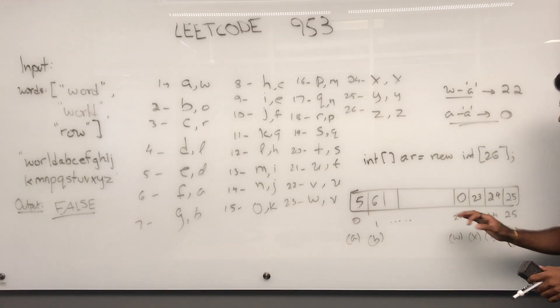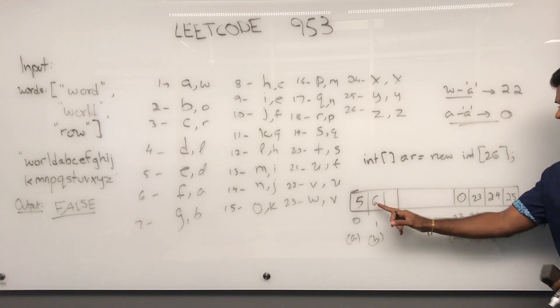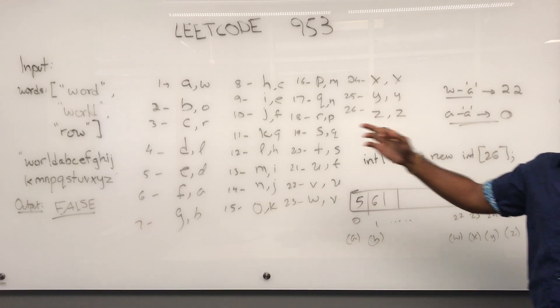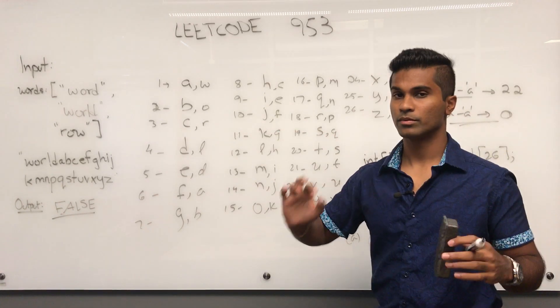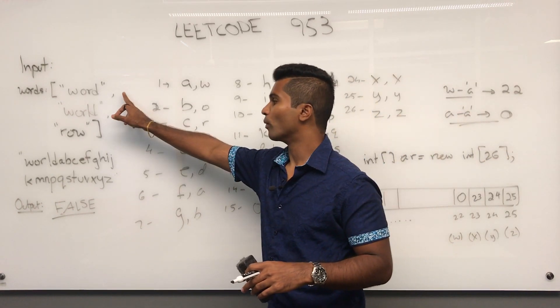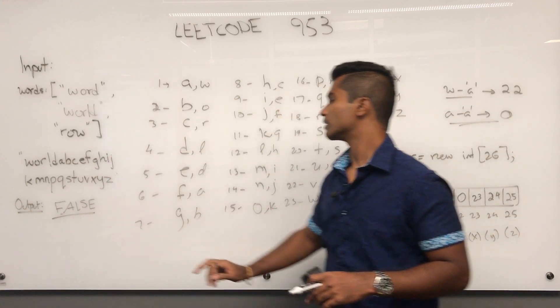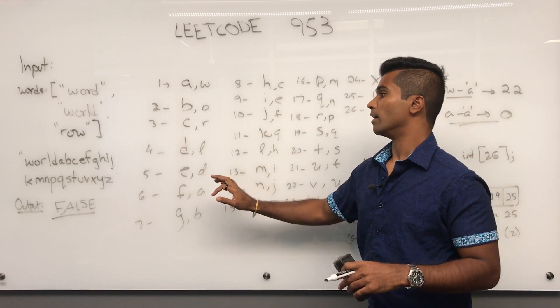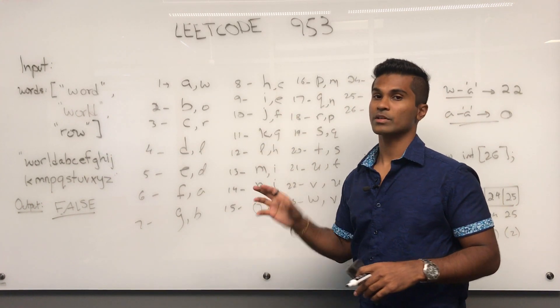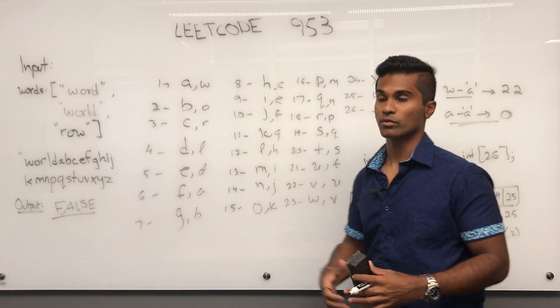We'll use the values in this array — just like we did to look at the difference between 'word' and 'world' — and using that comparison we can return true or false.